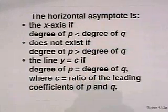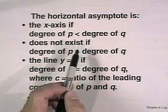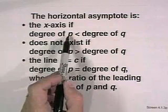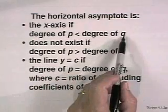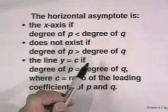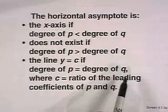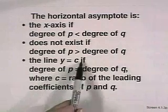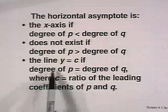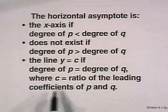A second important characteristic is the horizontal asymptote. There are three conditions which we must study in order to understand horizontal asymptotes. The horizontal asymptote might be the x-axis. We can tell that by looking at the degrees of the numerator and denominator. If the degree of p is smaller than the degree of q, then the horizontal asymptote is the x-axis, the line y equals zero. There is no horizontal asymptote if the degree of p is larger than the degree of q. The line y equals c will become the horizontal asymptote if the degrees of the numerator and denominator are the same.